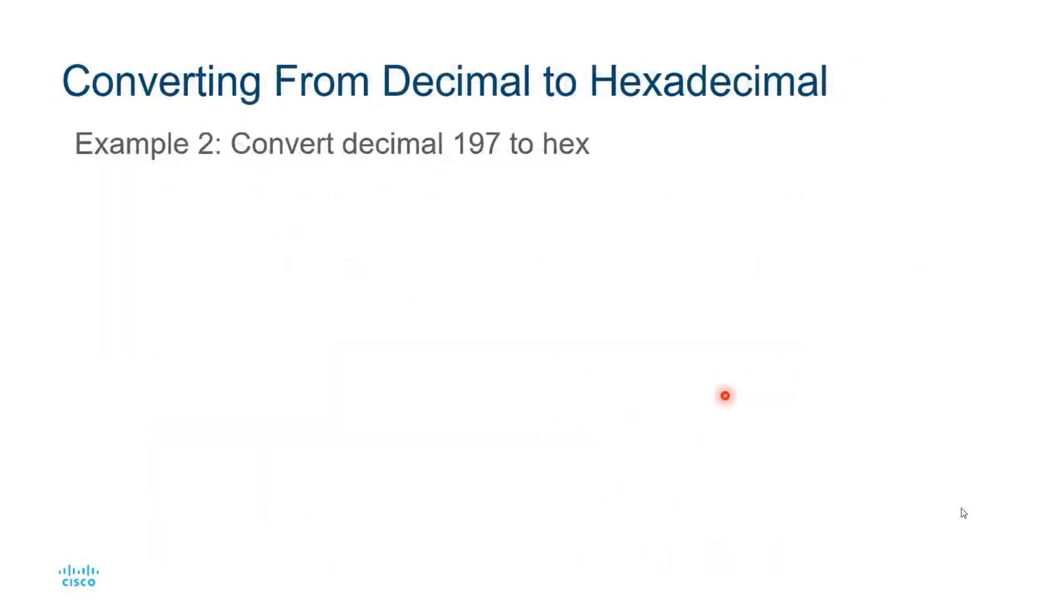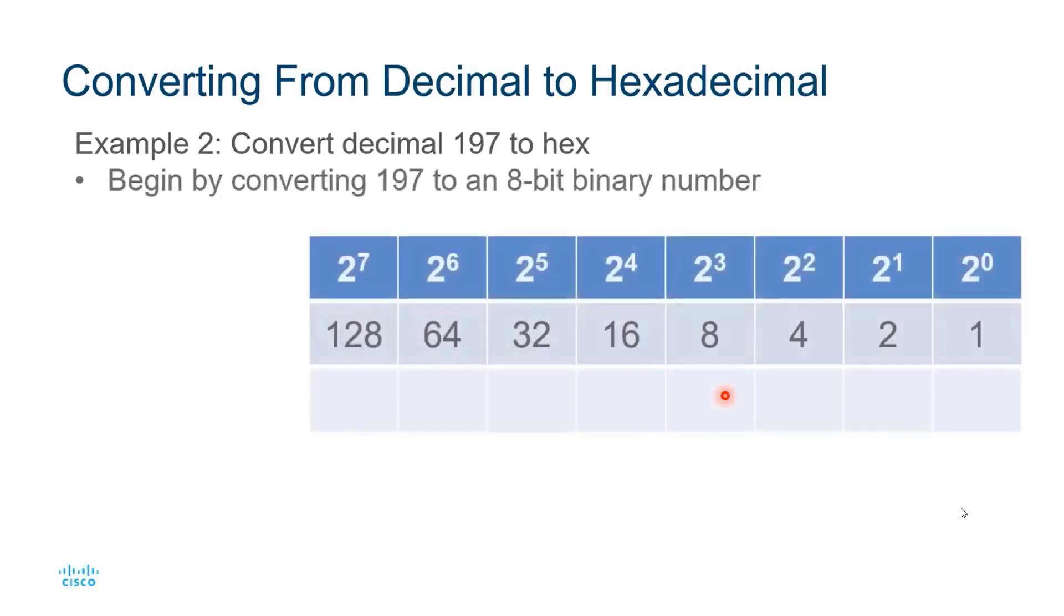Let's convert decimal 197 to hex. First I'll begin by converting 197 to an 8-bit binary number. Here I've drawn out the first 8 place values of the binary number system. We need to find out what combination of these place values adds up to 197.